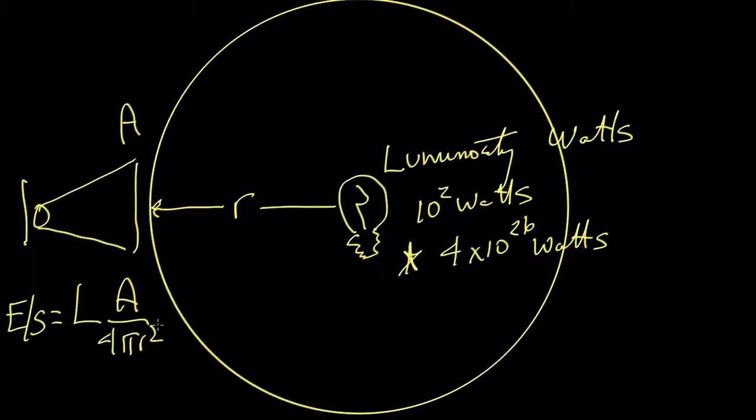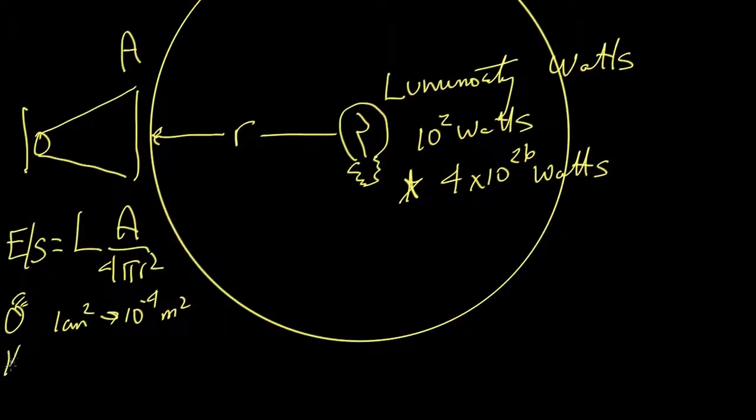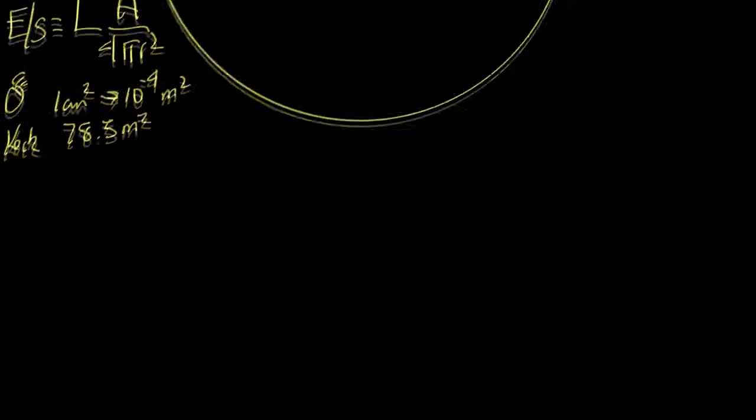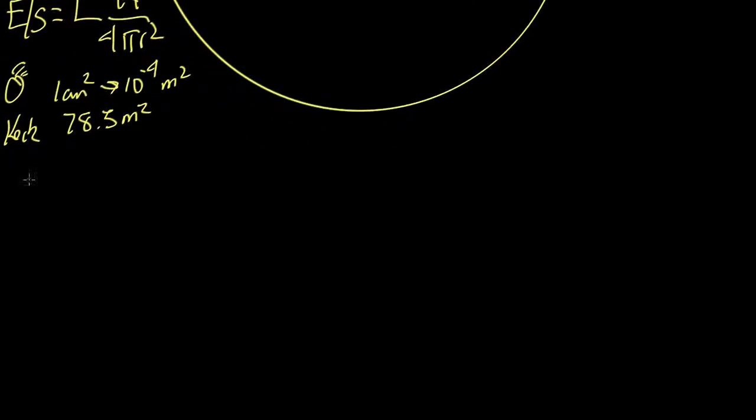Now, to make life a little more complicated, we know that telescopes come in all different sizes. Our eye is a telescope, so our eye has an area of about 1 centimeter squared, or that's about 10 to the minus 4 meters squared. The Keck telescopes, which are among the largest on Earth, have collecting areas of about 78 and a half meters squared. So, to get around the fact that we have different sized telescopes, astronomers come up with something known as flux.